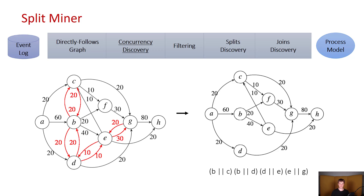For example, here we can see that there was concurrency between the activities B and C, also between the activities B and D, D and E, and E and G. The entire set of those activity pairs will be saved to be used in a future step.